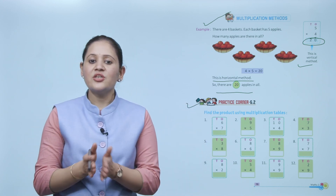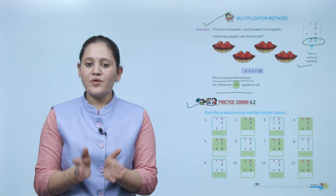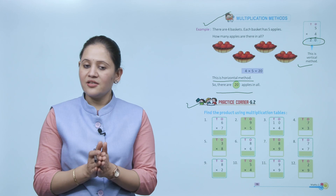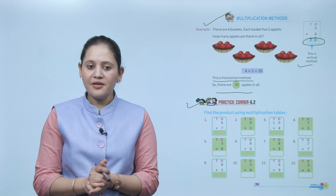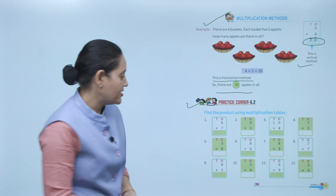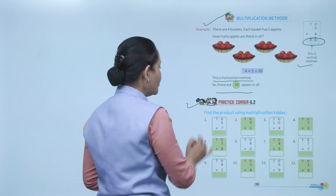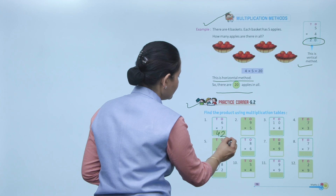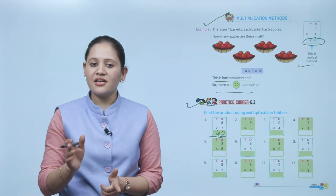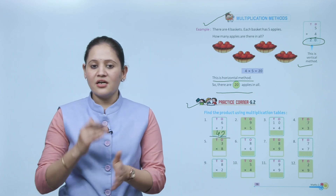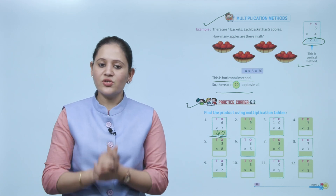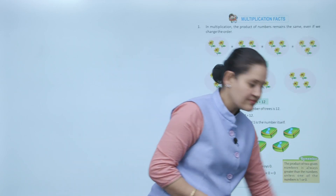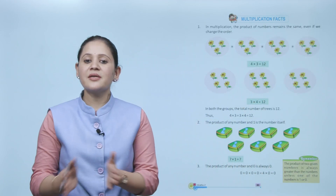Next is Practice Corner 6.2. Find the product using the multiplication table. For multiplication you must remember the table correctly, so revise all tables. For example, 6 into 7 equals 42. You have to practice all these questions.